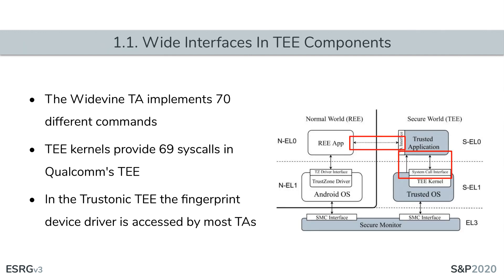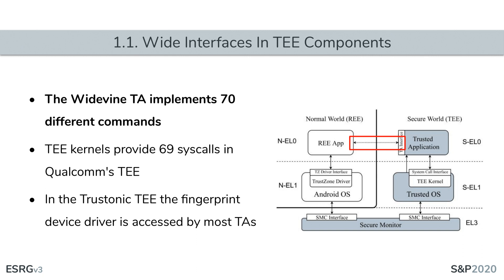Wide interfaces in TE systems promote designs more prone to security vulnerabilities. This issue presents itself in three main ways. The first is in the number of trusted applications and the number of commands they expose to the normal world. For example, in a particular release of the Qualcomm TE, the Widevine TA — which is part of a DRM implementation — exposes 70 different commands, and most of them manage complex data structures. It's not surprising that vulnerabilities have been found in them.